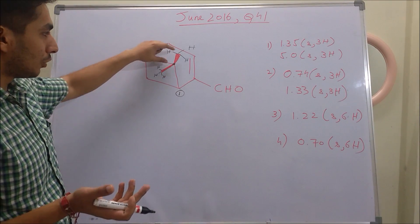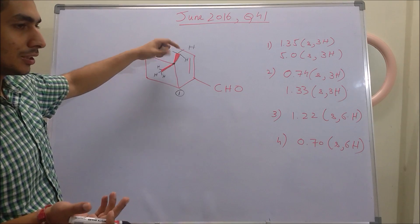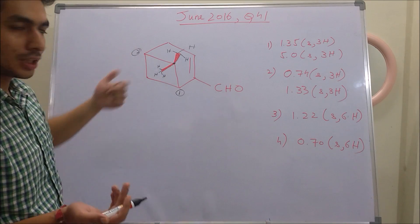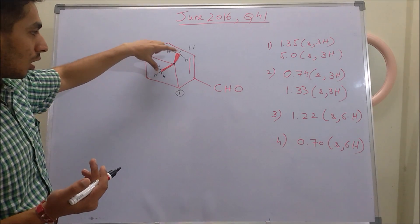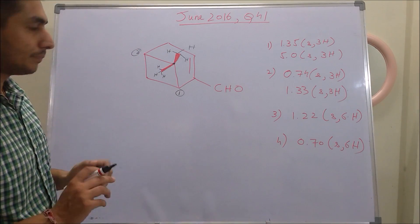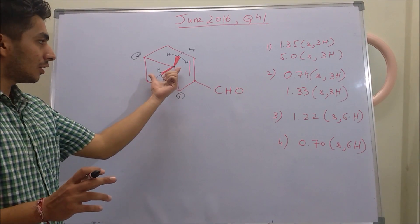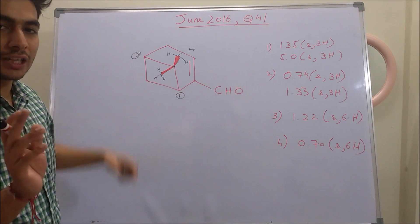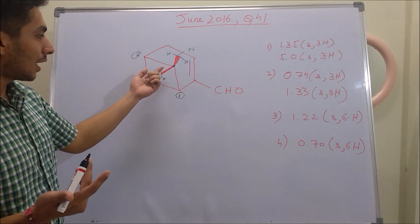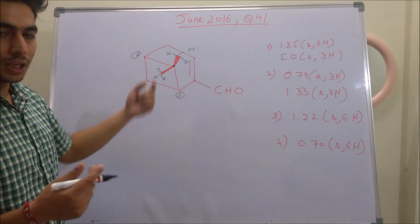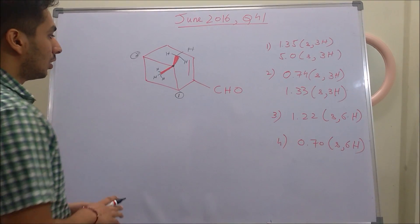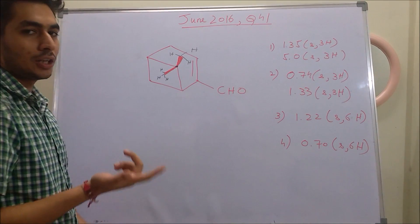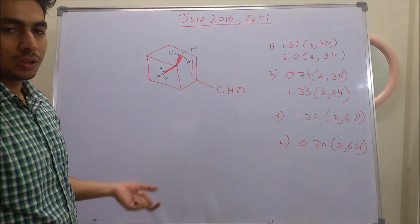For example, if you replace one of the methyls with chlorine, you get a chiral compound. Similarly if you replace the other methyl with chlorine, you also get a chiral compound. So these two are diastereotopic. For diastereotopicity you need two chiral centers. One chiral center is present here, and we need to identify the second chiral center — looking at this particular carbon nearby.